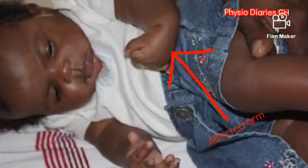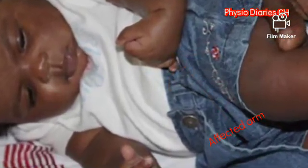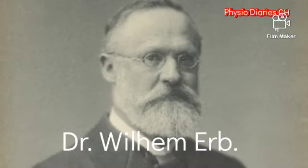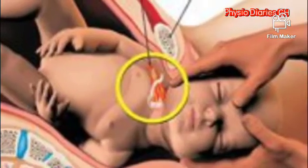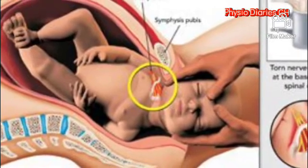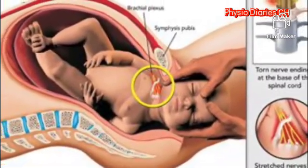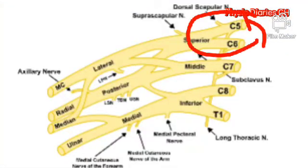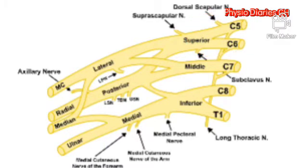Erb's palsy is established to be the commonest obstetrical brachial plexus injury. It is a condition first identified by the renowned medical doctor Wilhelm Erb. Erb's palsy affects two in every 1000 live births. It occurs when an injury happens to the upper nerve roots of the brachial plexus, usually at C5 to C6 levels. The brachial plexus is a group of nerves that provides sensory and motor functions to the human arms, and damage to these nerve roots causes weakness to the shoulder muscles.